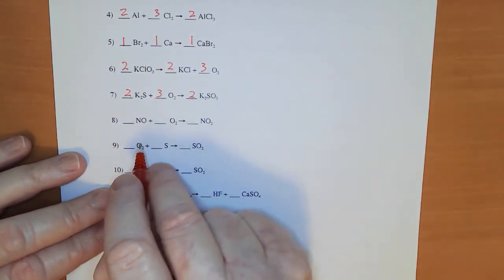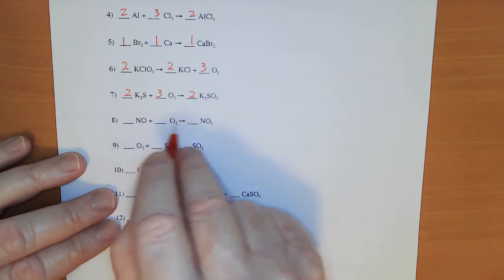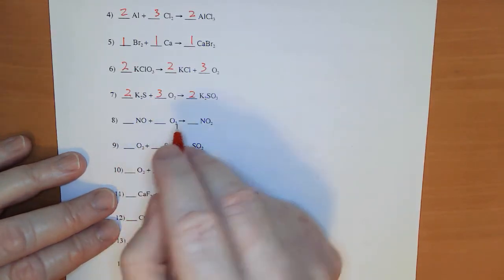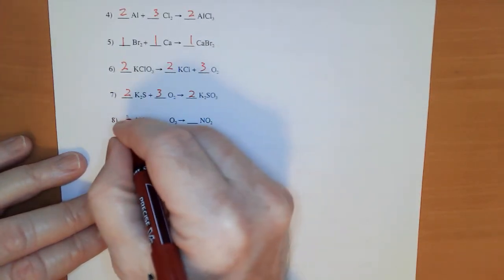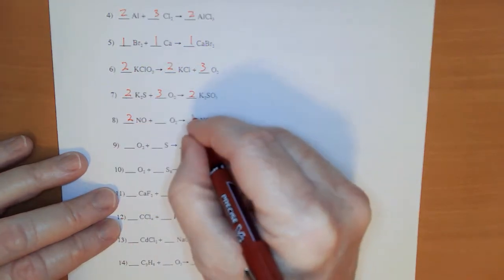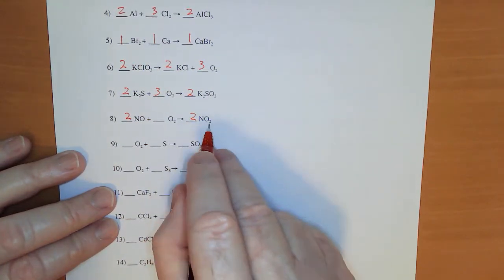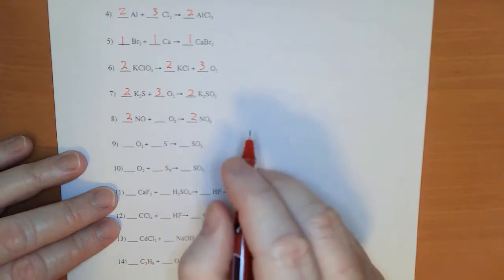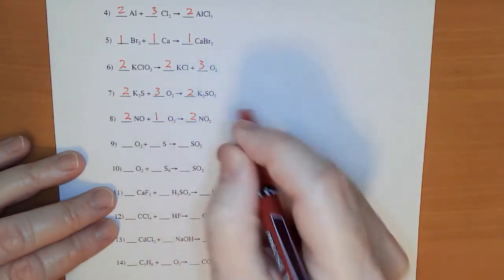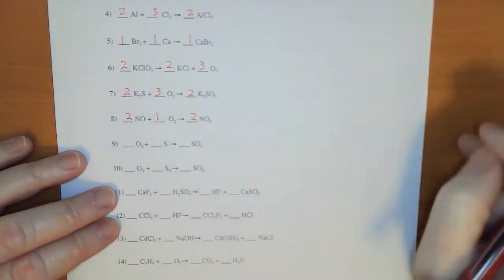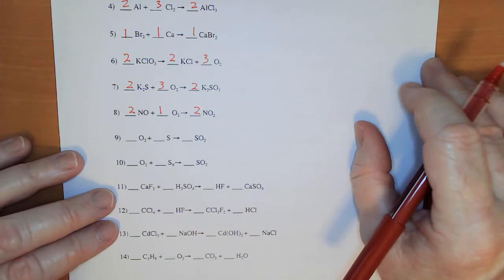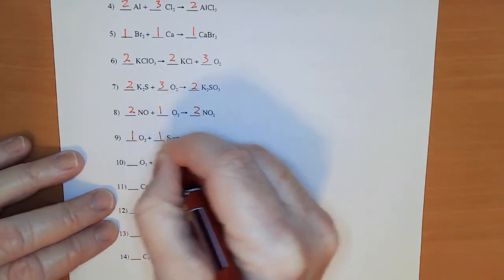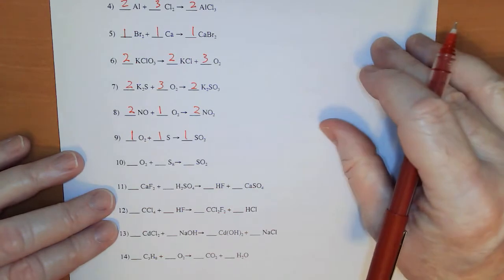For this one, at first I think I'm okay, but then I notice that I've got oxygen there. So I think I'm going to have to try to put a 2 there and a 2 there. So 2 times 2 is 4 — 2 oxygens and 2 oxygens is 4. Put a 1 there. My nitrogens balance out. Number 9: 1, 1, and 1.